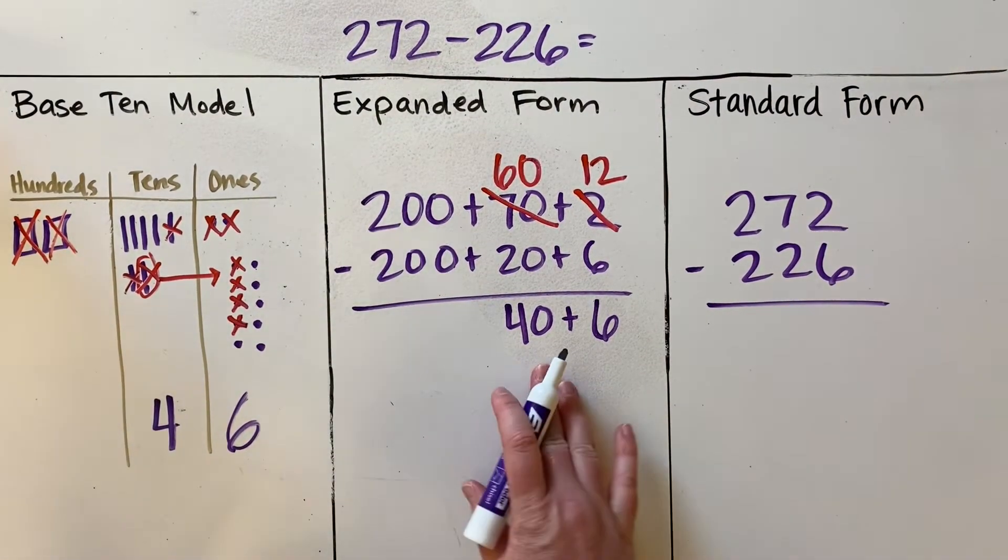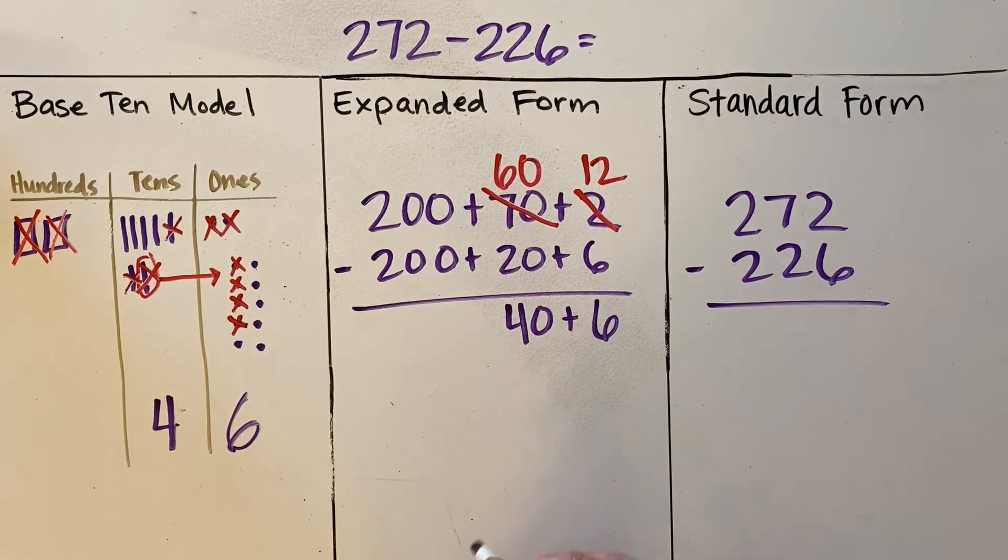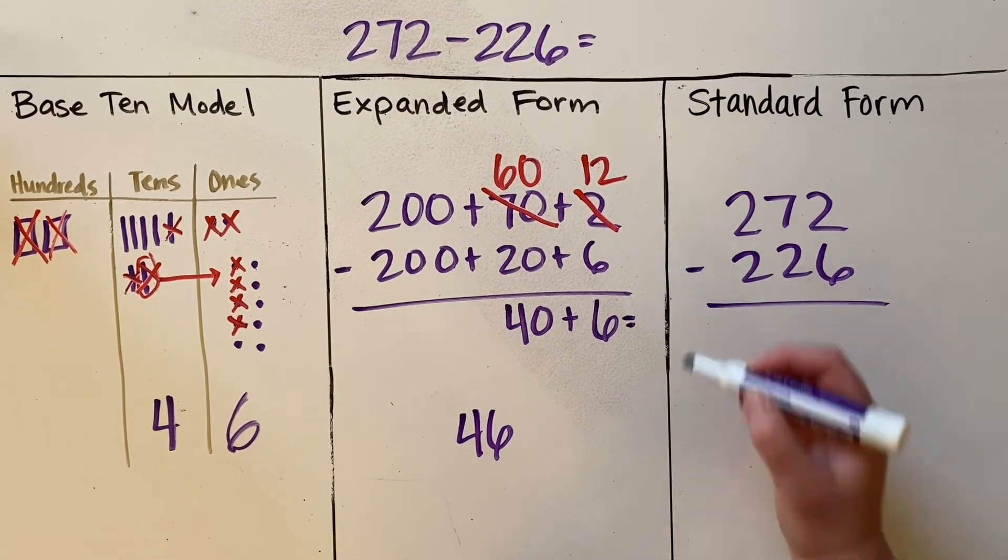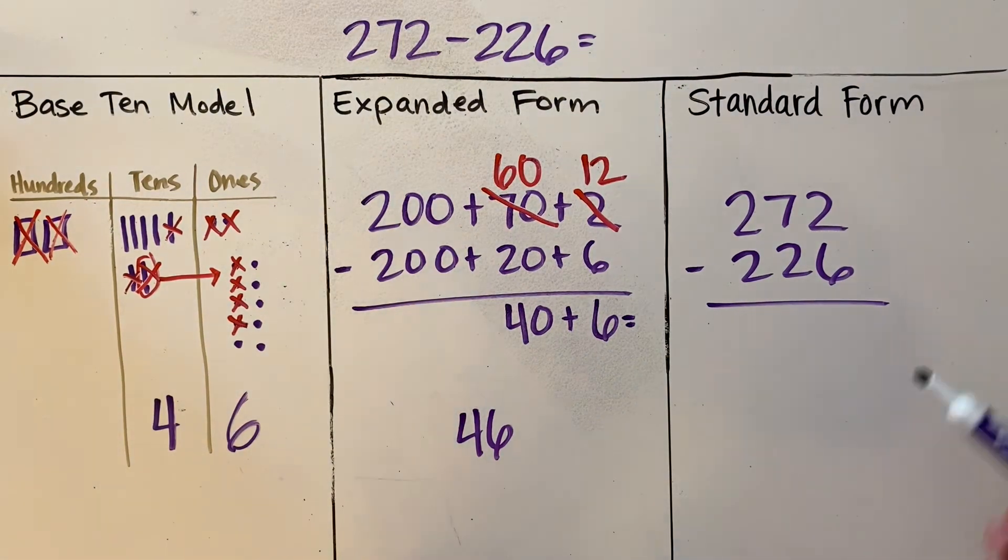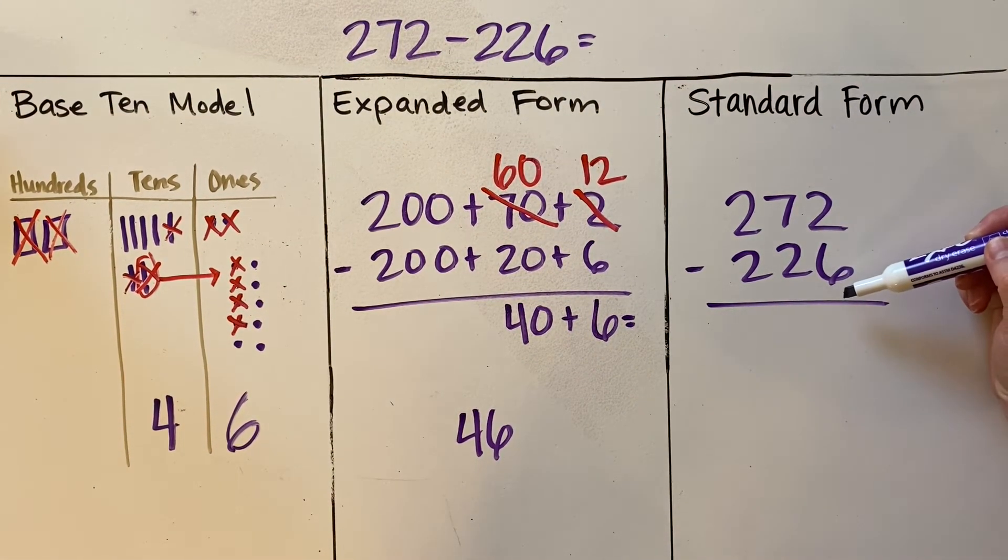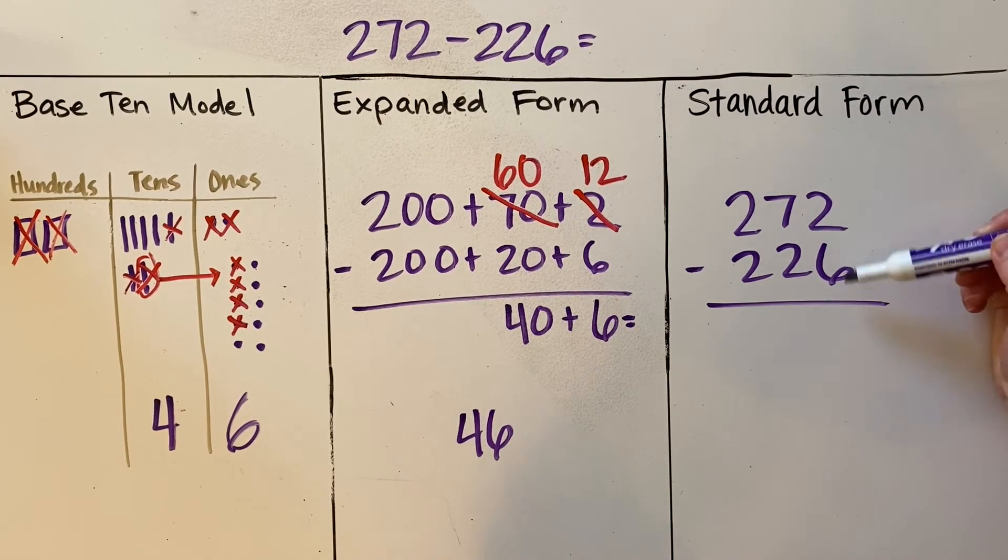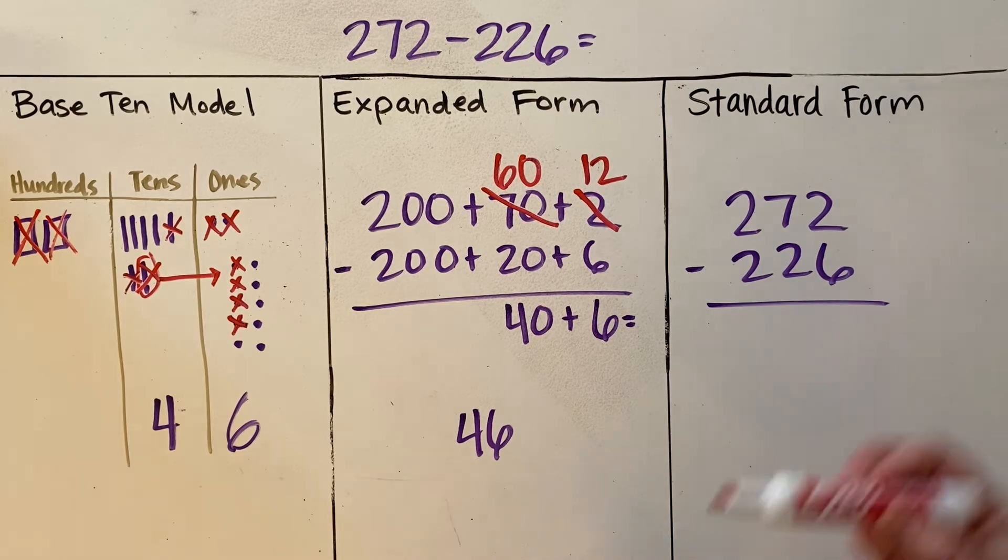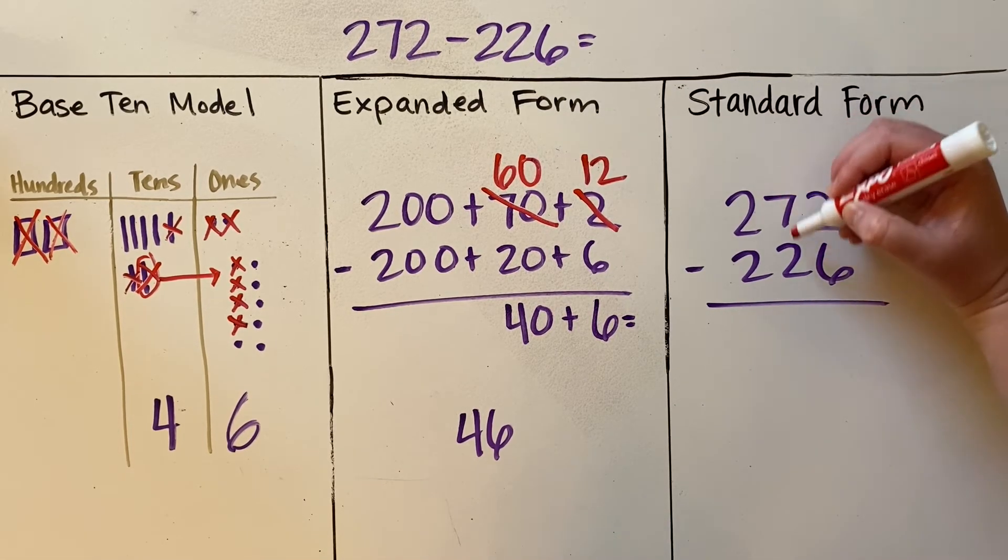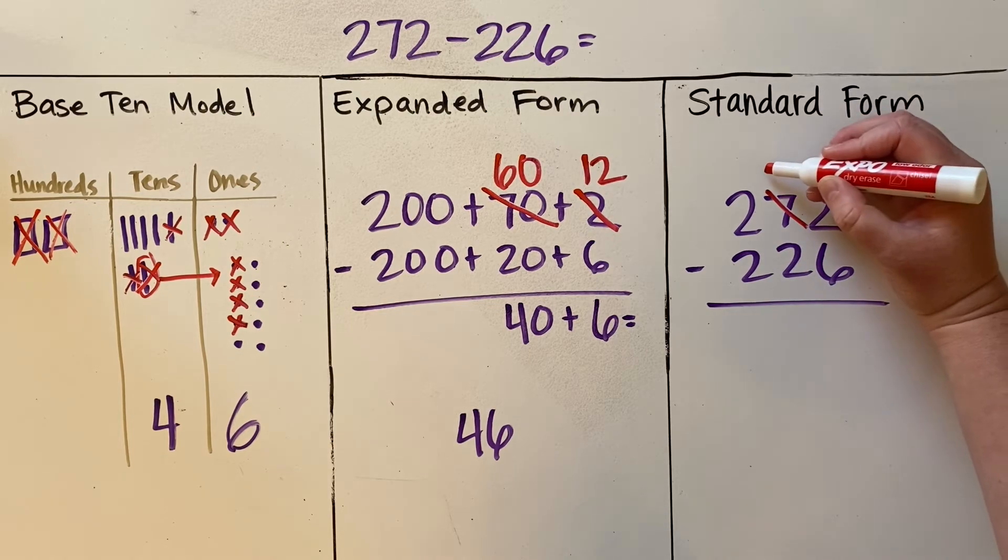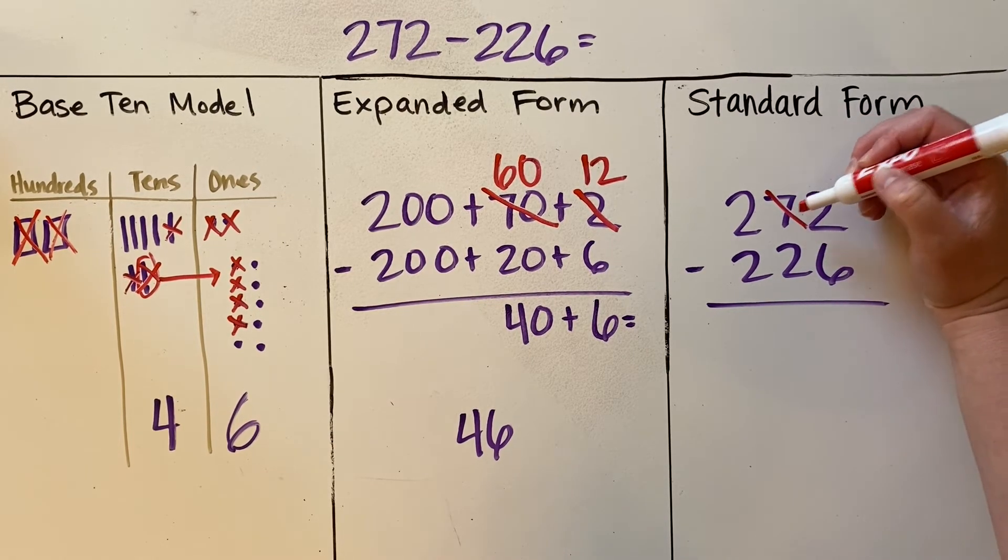And if we do the same thing over here, we can see, oh, 2 minus 6—I can't do 2 minus 6 because there's not enough. So I look over to my next place value, the tens. I'm going to take something from the tens. Instead of seven tens, I'm now going to have six tens, and that ten is going to be regrouped over to the ones.